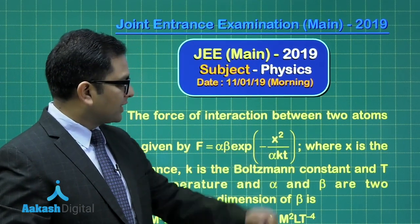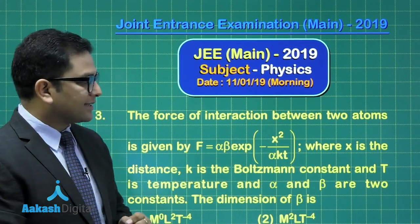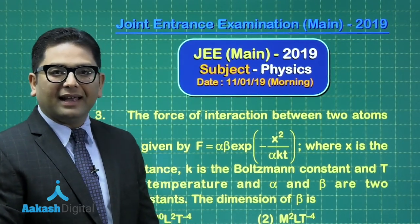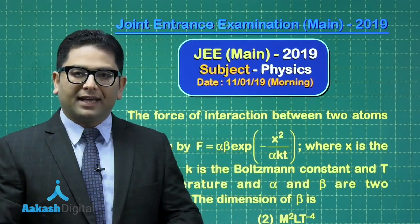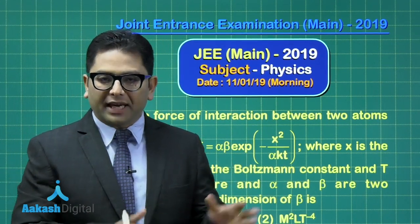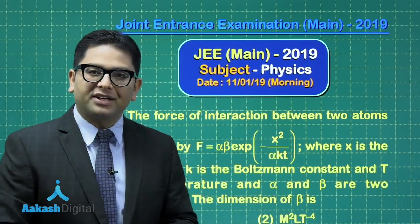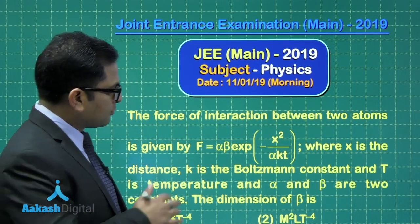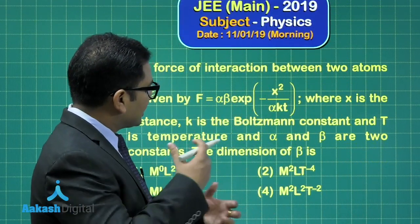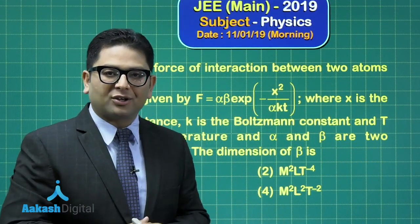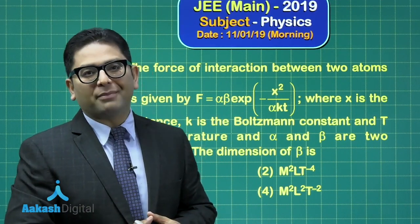It says the force of interaction between two atoms is given by this much. F equals to alpha beta exponent minus x squared by alpha kT. And this k is the Boltzmann's constant. Capital T is the temperature. X, of course, is the distance. Alpha beta are two constants and whose dimension is unknown. And from this given question, we need to calculate the dimension of beta. A very straightforward, yet a small tricky point is there which is associated with this part, that instead of going and hunting the dimension of Boltzmann's constant, you move a bit trickily, k times t has the dimension of energy.